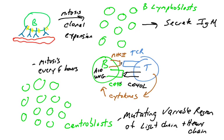UNG, uracil DNA glycosylase, removes the uracil and replaces, the DNA repair enzymes replace the uracil with a random nucleotide, which could change the codon, which could change the amino acid present in the variable region, which then could change the affinity of the antibody for the antigen.